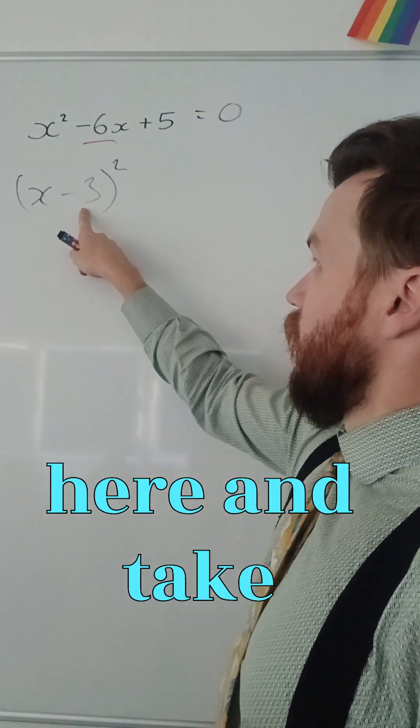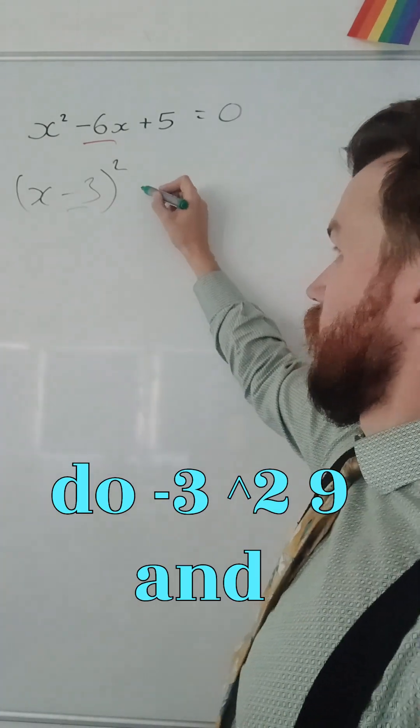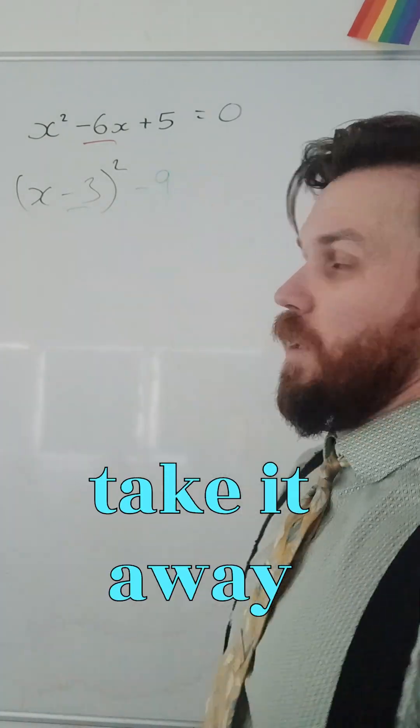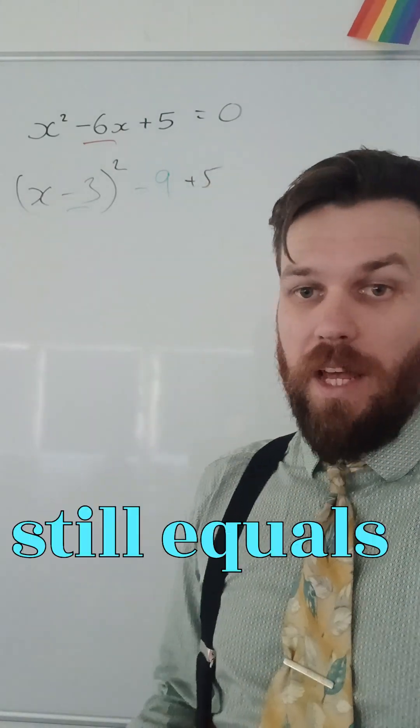Now, I'm going to square whatever's here and take it away. So, this is negative 3, so I'm going to do negative 3 squared, 9, and I'm going to take it away, so I get negative 9. I've still got this plus 5, and it's still equal to 0.